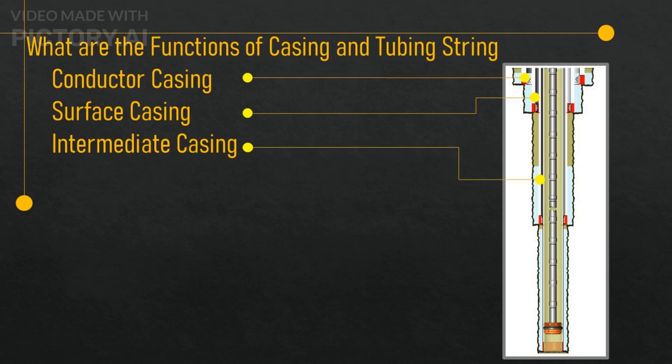Intermediate casing string: this is the third casing string that is installed in the well, and it is usually cemented inside the surface casing string. The intermediate casing string serves as a secondary barrier against the formation fluids and pressures, and it also protects the wellbore from the corrosive or abrasive effects of the drilling fluids or the formations. The intermediate casing string may have a diameter of 13 to 16 inches (33 to 41 centimeters) and a length of 5,000 to 15,000 feet.